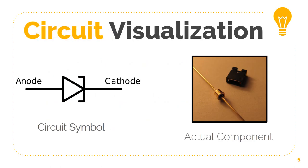Now, here are the circuit components. As you can see, the anode and cathode are clearly mentioned in the circuit symbol. You can also visualize the actual component which is given on the slide.